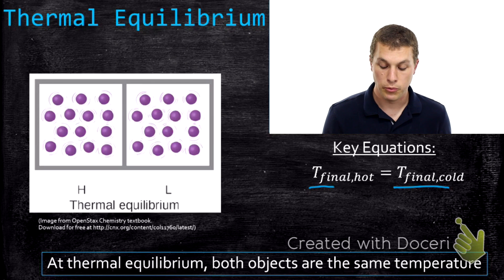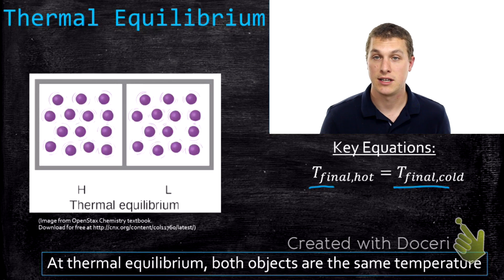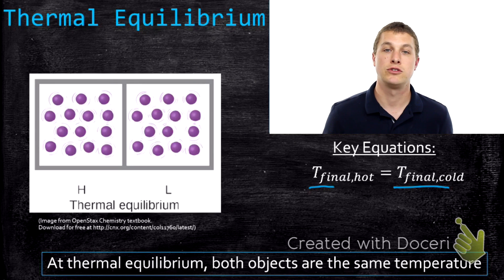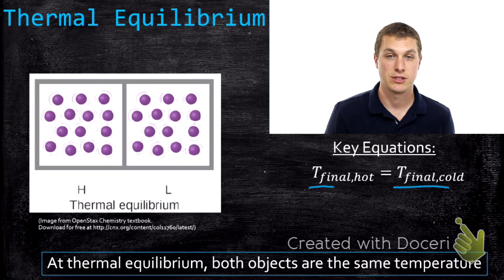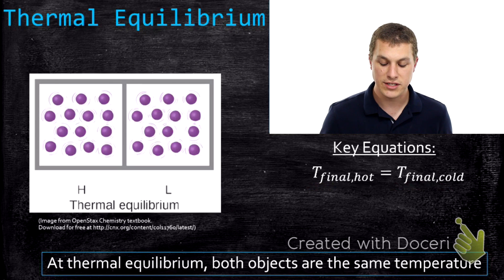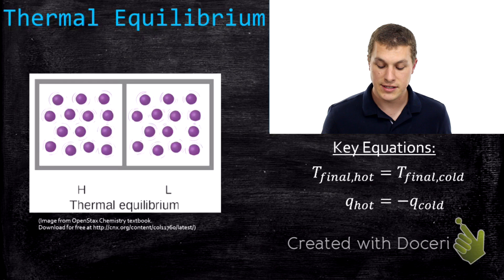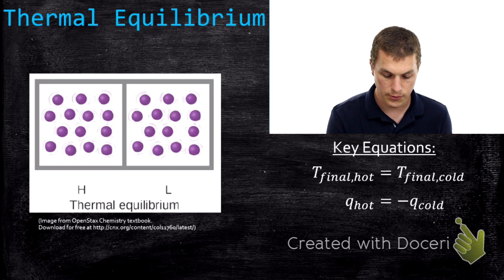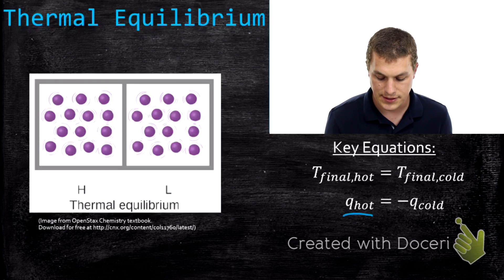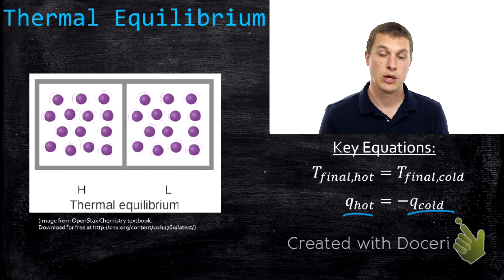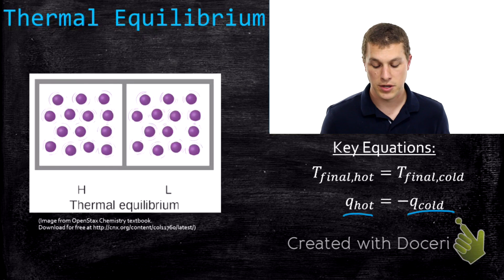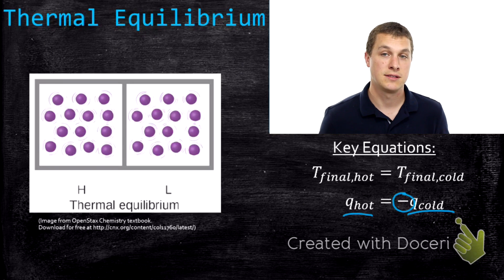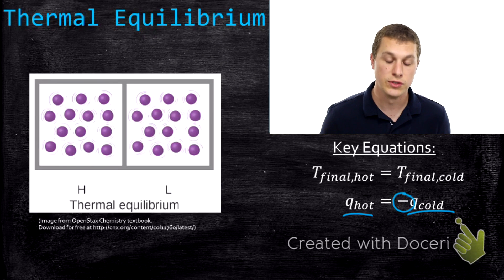When we want to solve problems using thermal equilibrium, we need to remember that the temperature of both objects in contact will eventually be the same at thermal equilibrium. The next equation is that the heat lost by the hot object is equal to negative the heat gained by the cold object — q_hot equals negative q_cold. However much heat energy the hot thing lost, that's how much the cold thing gained. We have this negative sign because they must be equal in magnitude but opposite in sign, since one thing is gaining heat energy and one thing is losing heat energy.